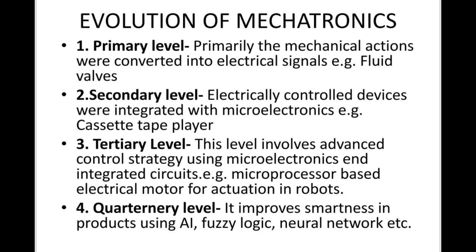The primary level involves the conversion of mechanical actions into electrical signals. For example, fluid valves. In the secondary level, some electronics were involved in the electrical signals for control. This is called the secondary level.